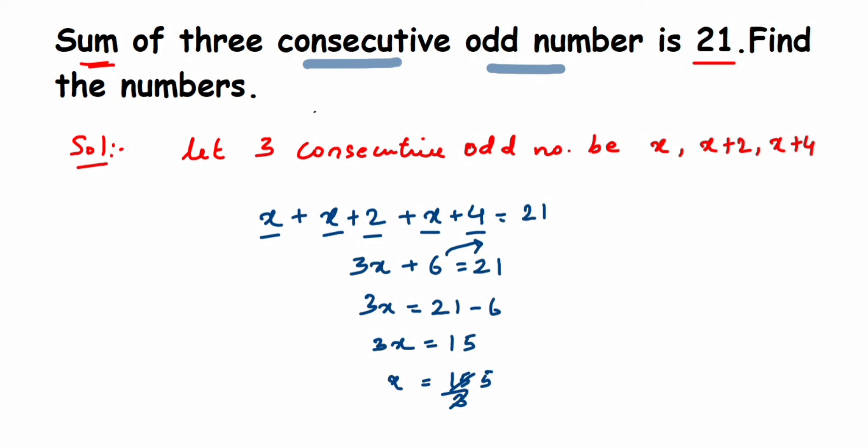We got x equals 5, so the first odd number will be 5. Then the second number will be x plus 2, which is 5 plus 2, which is 7. And next we got x plus 4, which is 5 plus 4, which is 9.